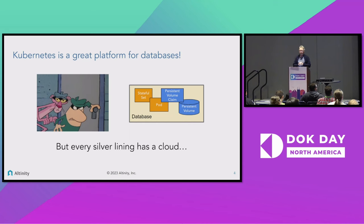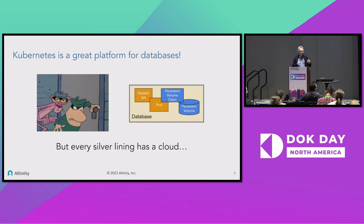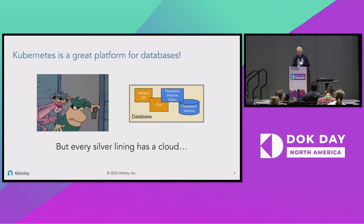Kubernetes turns out to be an absolutely awesome platform for databases. One of the things is there's a portability story: if you need to run in different locations — not just multi-cloud, but testing on your laptop and then uploading to Amazon EKS — the same application description and configuration will work in both locations. The problem is that since Kubernetes has become a good place to run data, that's where people will go if they want to steal it. So we're going to talk about security.